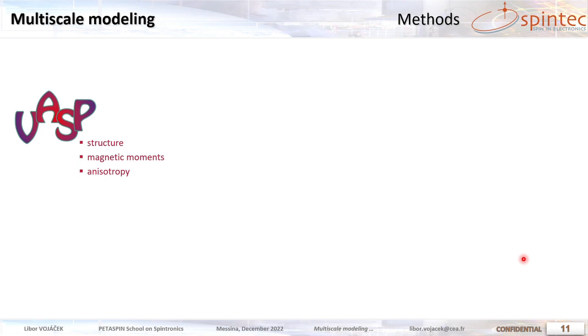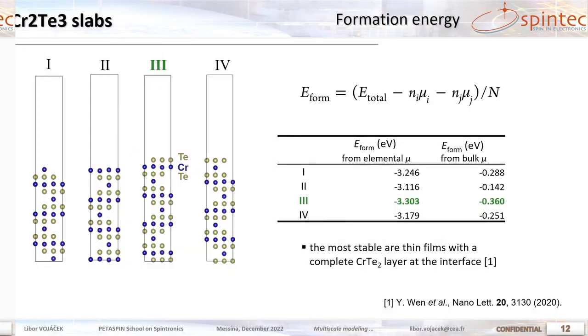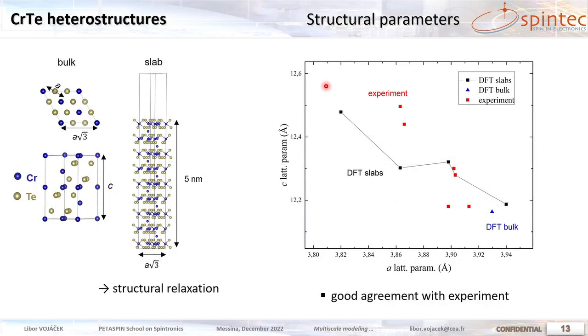We start from ab initio calculations in DFT getting the ground state and we did an extensive study of which parameters and approximations are appropriate in this case. We can get the ground state structure, magnetic properties and the anisotropy and so on. But first we determine the stability of the termination. So there are four possibilities and we calculate that the one that is stable is the one with the complete chromium telluride layer at the interface. It has the lowest formation energy. So we will use this in the further calculations.